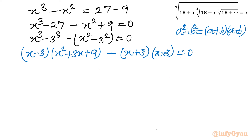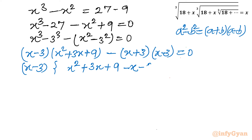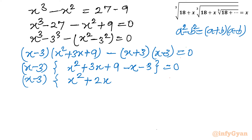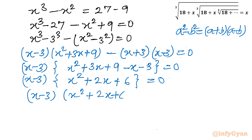Now we can see (x minus 3) is a common factor. Taking (x minus 3) common, what remains inside the bracket is x squared plus 3x plus 9 minus (x plus 3), which gives x squared plus 3x minus x plus 9 minus 3, simplifying to x squared plus 2x plus 6. So we have (x minus 3)(x squared plus 2x plus 6) equals 0. Both methods give the same result. Setting x minus 3 equals 0 gives x equals 3.